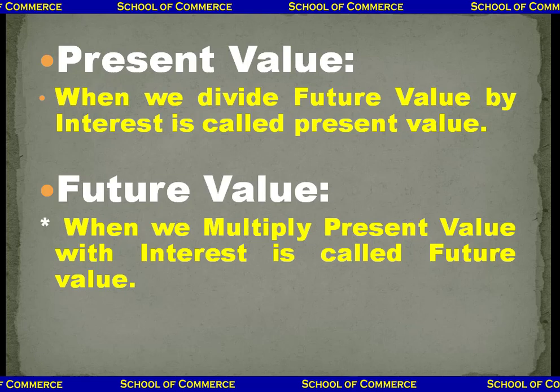The other basic concepts of this chapter are present value and future value. These are the most important things. In business we always think about the present and the future. Present value is today's value — 100 taka today, the present value is 100 taka. But if 100 taka becomes 110 or 120 tomorrow, that is called future value. In short, today's value is present value and tomorrow's value is future value.